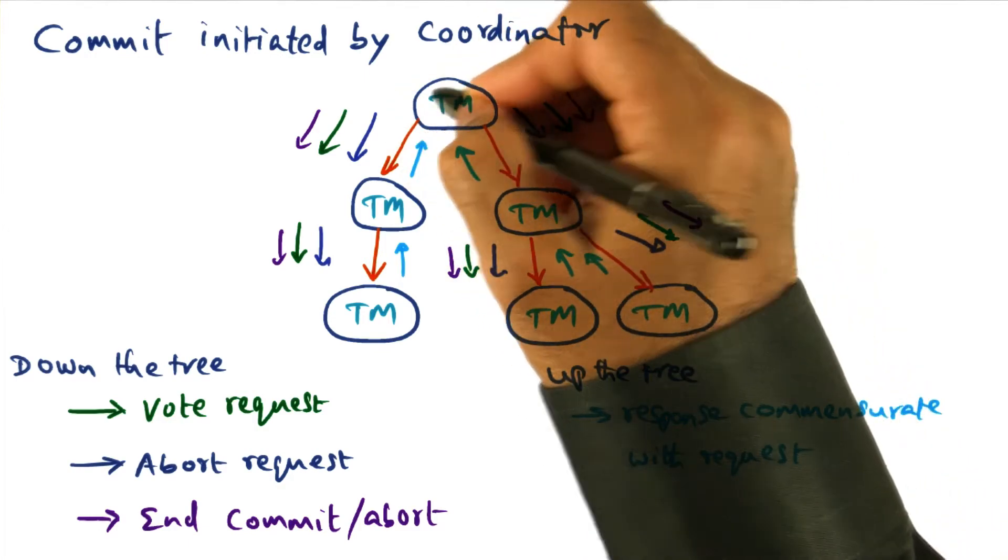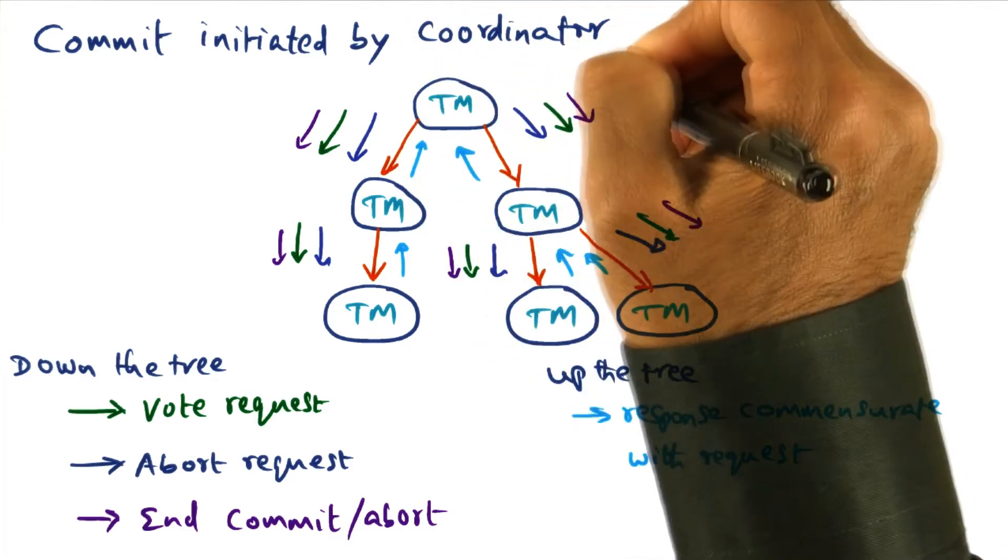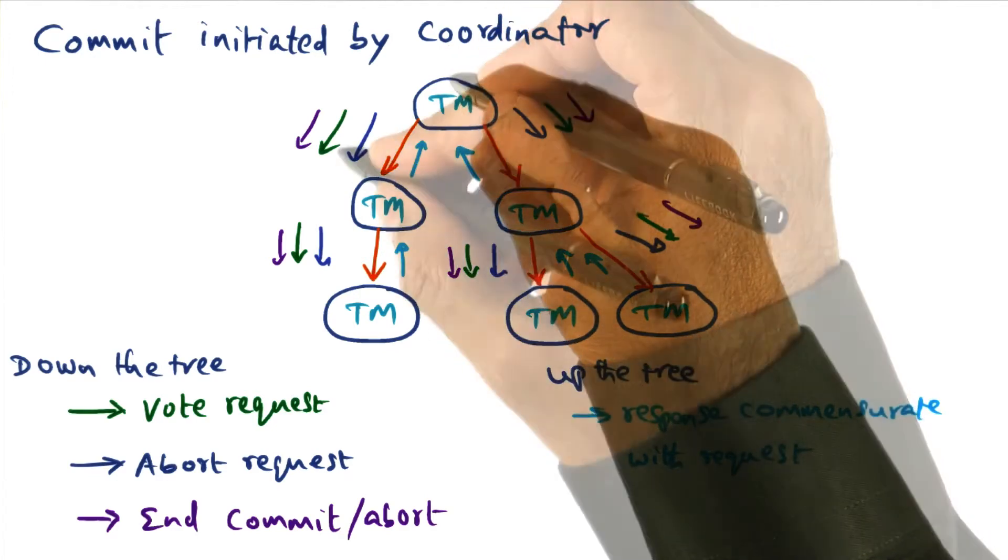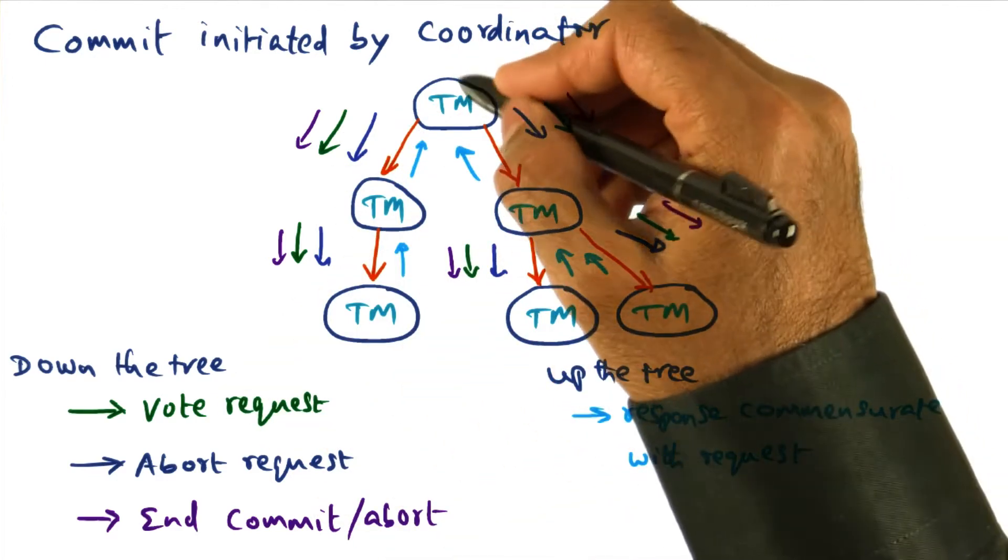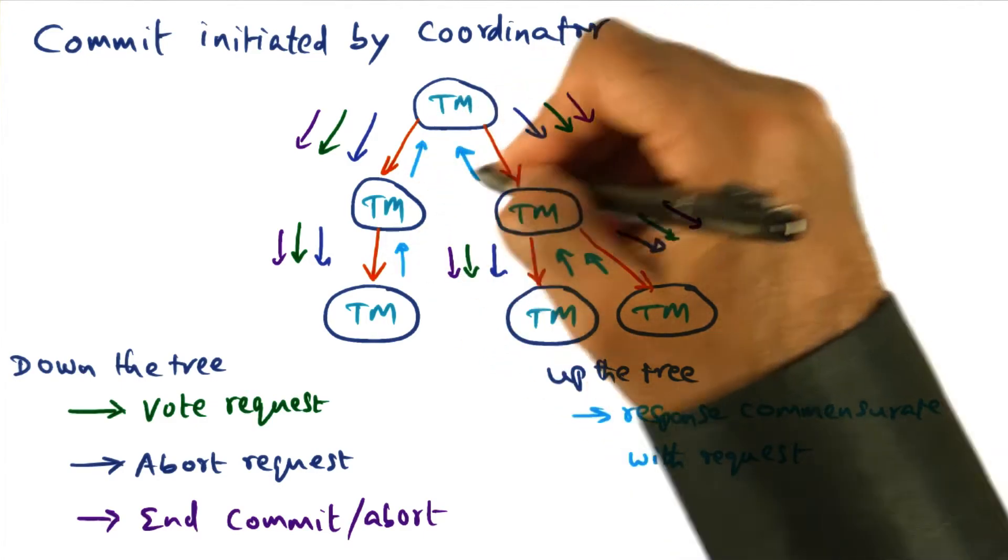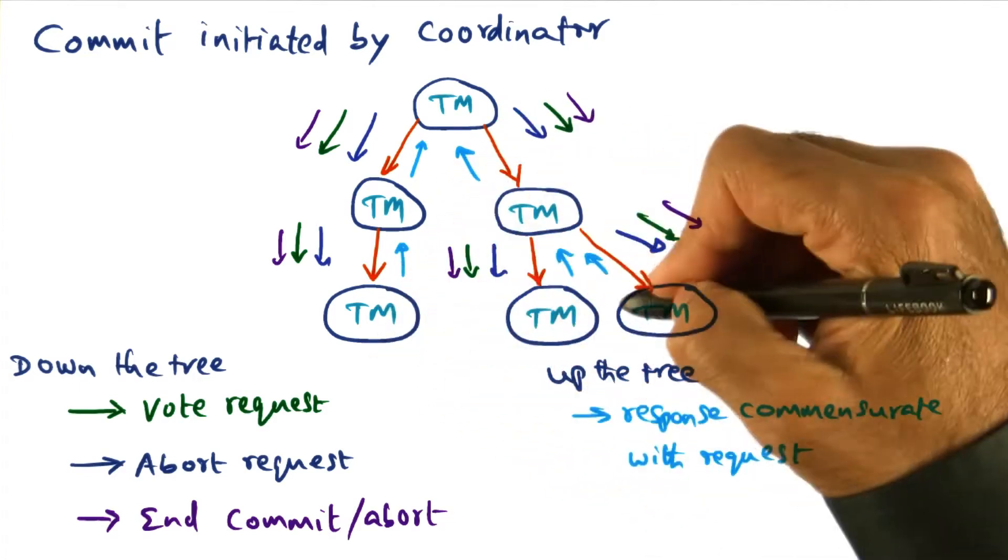And it is the coordinator that initiates the termination of a transaction. The termination initiated by the coordinator can be for commit or it can be an abort. And the different color coded arrows show you what are all the kinds of commands that the coordinator may issue to its subordinates, who in turn will issue the same commands to their subordinates.